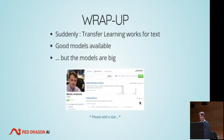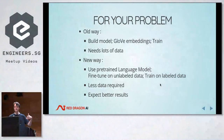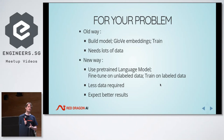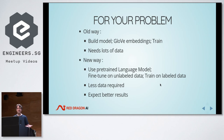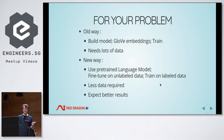To wrap up: the old way of dealing with your problem is you build a whole model, use some GloVe embeddings, train it, and need tons of labeled data. The new way — which has come to the fore in the last couple of months — is to take a pre-trained language model, fine-tune it on your own unlabeled data to get a feel for the language you'll be using, then train on labeled data. This can be a much smaller data set, and you can expect better results.